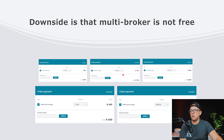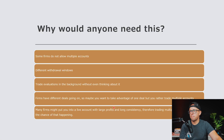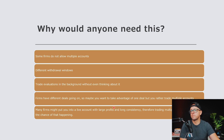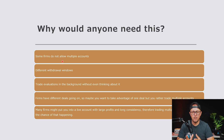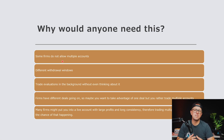Let's talk about why anyone would need this. One reason is that a lot of firms do not allow multiple accounts per user. For example, TickTick doesn't allow you to have multiple accounts at once, especially the direct account. If you have a direct account without the evaluation, you can only have one per user. You could have a 25K and a 50K, but you cannot trade the same instrument in both accounts. You can't trade NQ on both accounts — you could trade ES on one and NQ on the other. So basically you could only have one account per instrument.